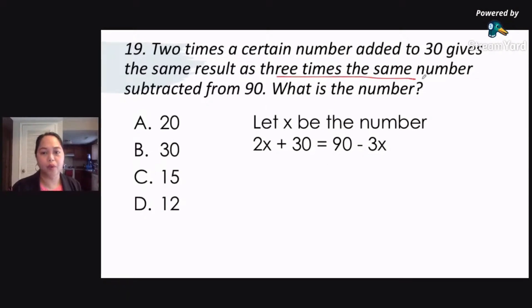As three times the same number, 3x, subtracted from 90. Subtracted from 90 means the 90 comes first, okay? So 90 minus 3x.